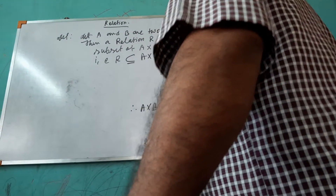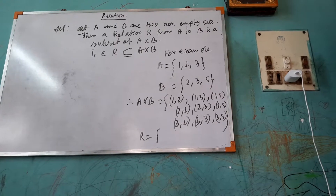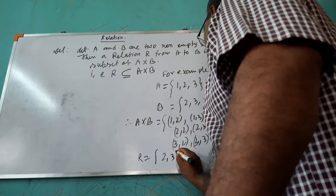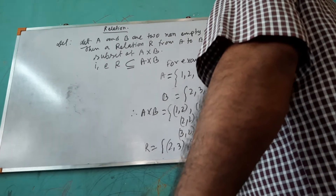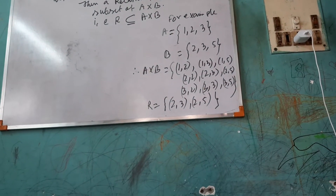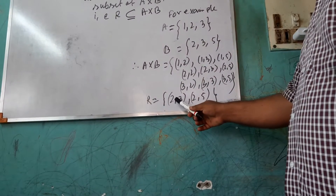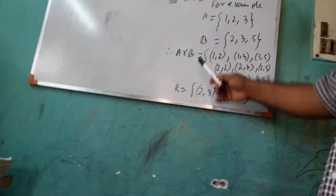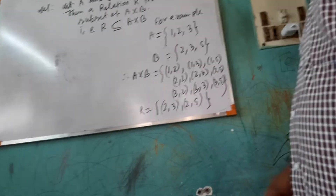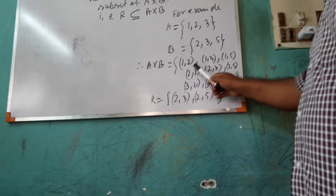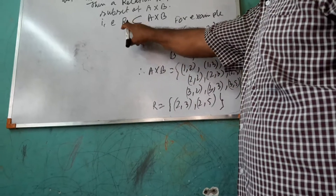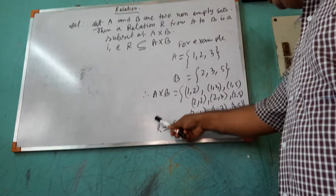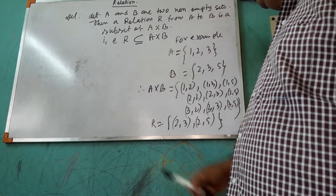So I am choosing, suppose, R equal to {(2,3), (2,5)}. These two elements I have taken from the Cartesian product of A cross B. That means this is a relation, which is a subset of A cross B. We can say R is a subset of A cross B, so R is a relation.